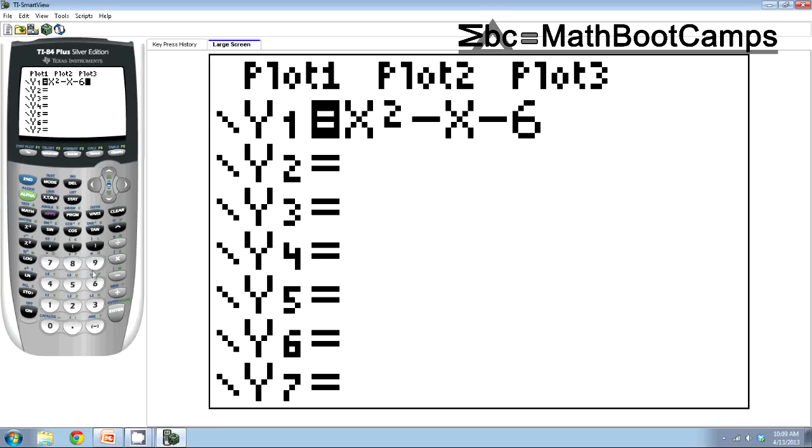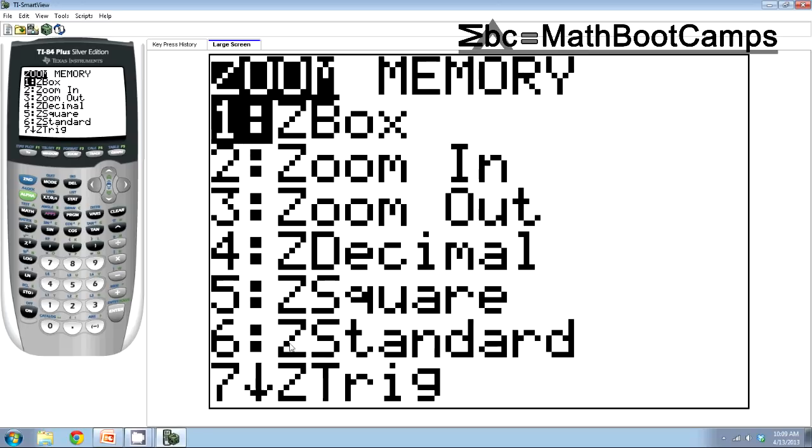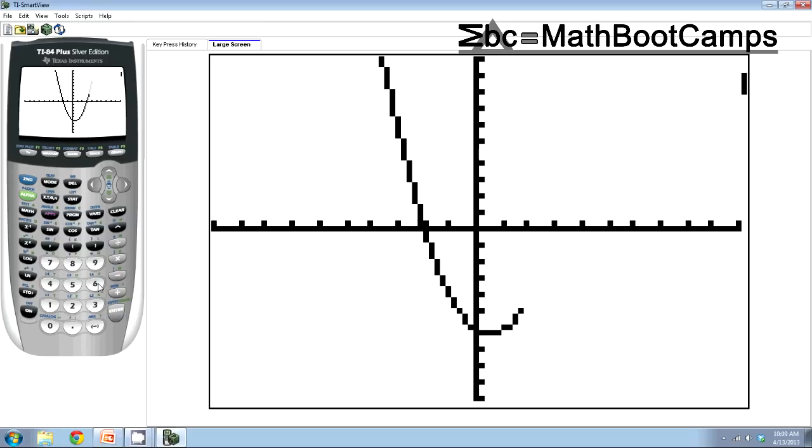All right, so the first thing I'm going to do is take a look at the graph just to see if there's anything I should be aware of. So I like to press zoom and go to number 6, zoom standard, to see a really nice picture. And so as this is going, what I'm looking at is seeing it does have x-intercepts, so that's where we cross the x-axis, and you can see right here and right here some x-intercepts. And then I see down here we do also have a y-intercept, where it crosses the y-axis.